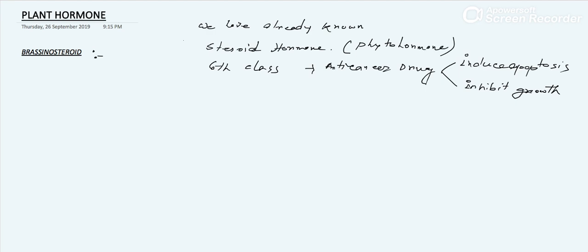Phytohormone means the hormone that is originated from the plant. It is a steroid hormone and a polyhydroxy steroid. This polyhydroxy steroid has been recognized as the sixth class of plant hormones, and it has utility as an anti-cancer drug.